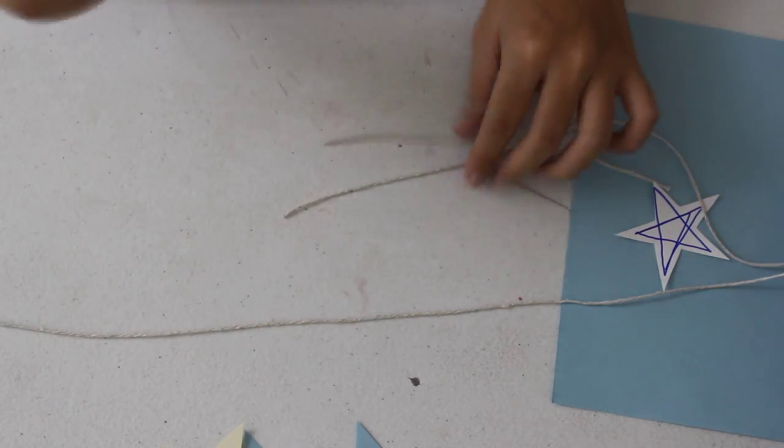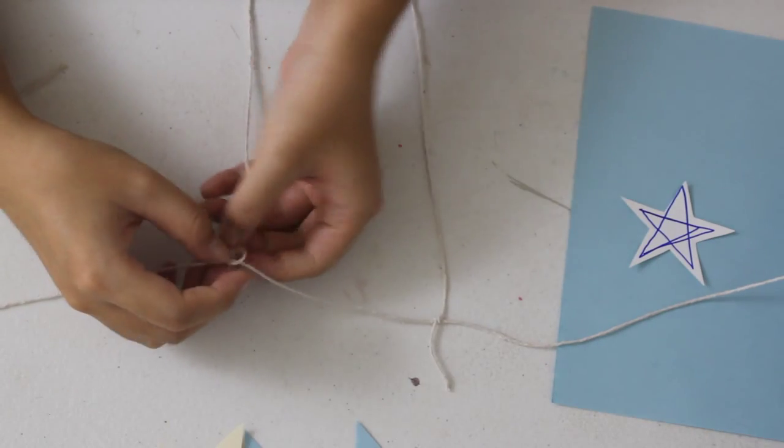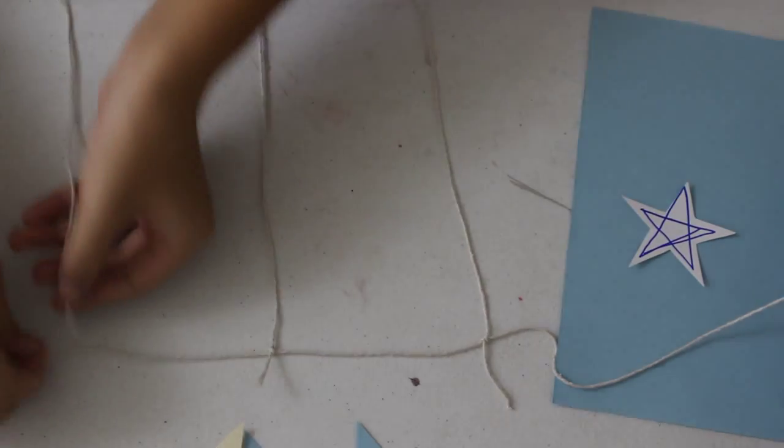Then cut out different lengths of twines to be used for the dangling stars. Tie those twines to the main one, leaving space between each dangling twine.